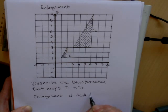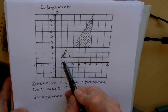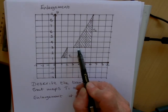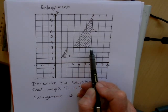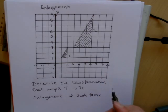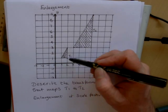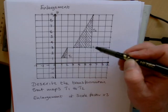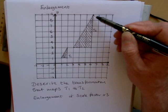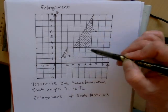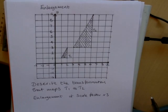That's fairly easy to work out. You simply check one of the side lengths. The base is 1, and the base of the bigger triangle is 3, so it's a scale factor of 3. You can check: the height is 2 and the height of the big triangle is 6 — 3 twos are 6. So everything looks fine there.